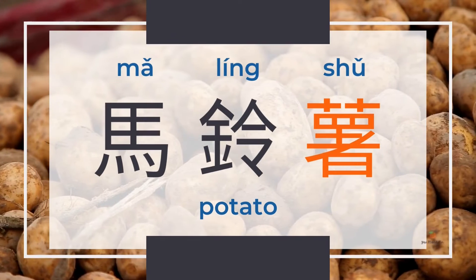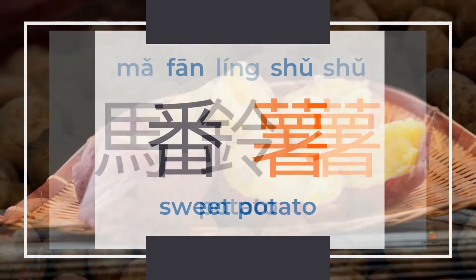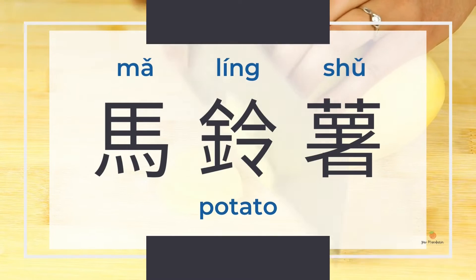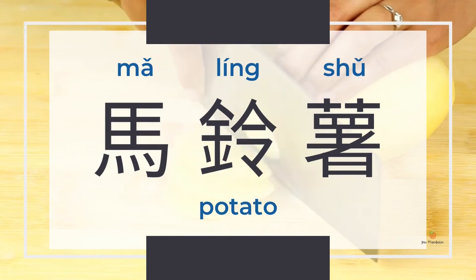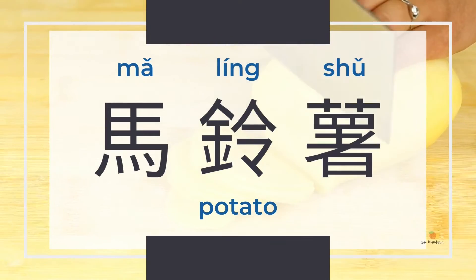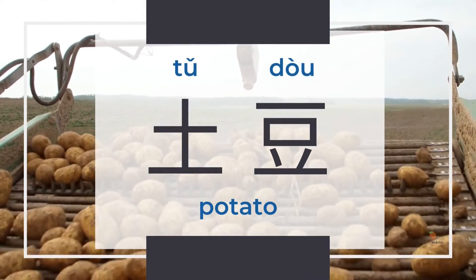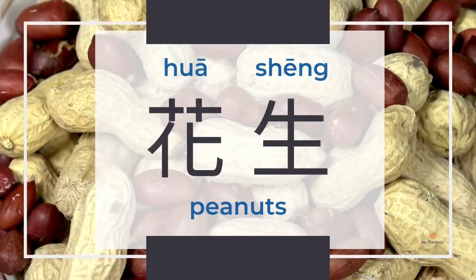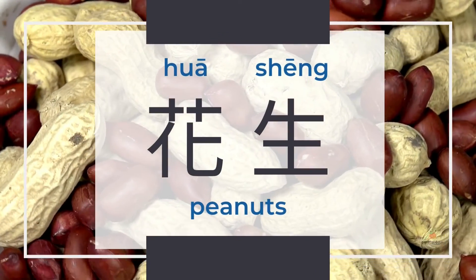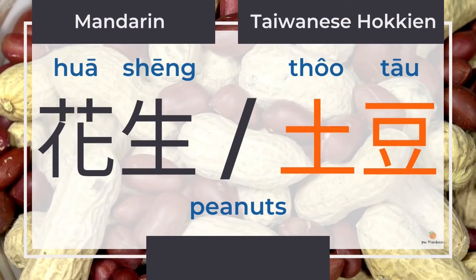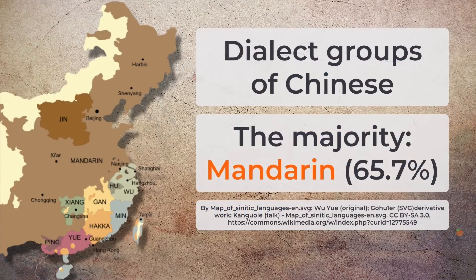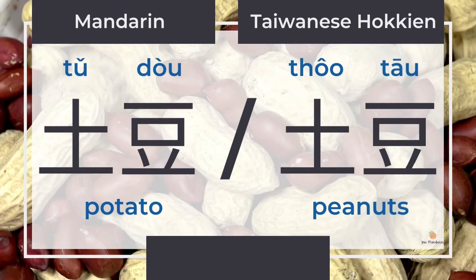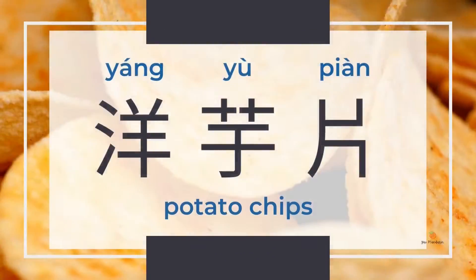Potatoes are 马铃薯 and sweet potatoes are 番薯. Potatoes have many names in Chinese. In Taiwan, we call potatoes 马铃薯, while in China potatoes are 土豆. If you tell a Taiwanese person 土豆, we may consider it peanuts (花生), because peanuts in Taiwanese Hokkien are called 土豆. There are many dialects in Chinese, so the same word can mean different things.